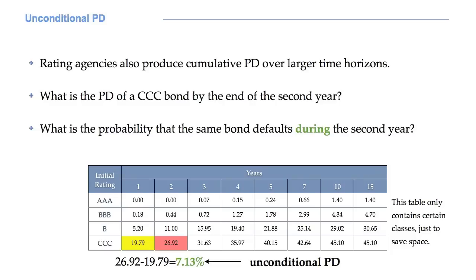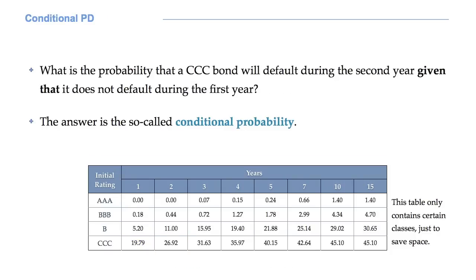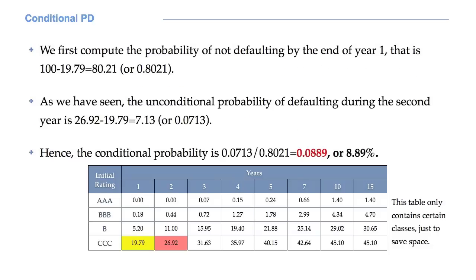Now, what is the probability that a AAA bond will default during the second year, given that it does not default during the first year? The answer is the so-called conditional probability. We first compute the probability of not defaulting by the end of year 1, that is 80.21%. We have already computed the unconditional probability of defaulting during the second year: 7.13%. Hence, the conditional probability is the ratio of these two probabilities, that is 8.89%.